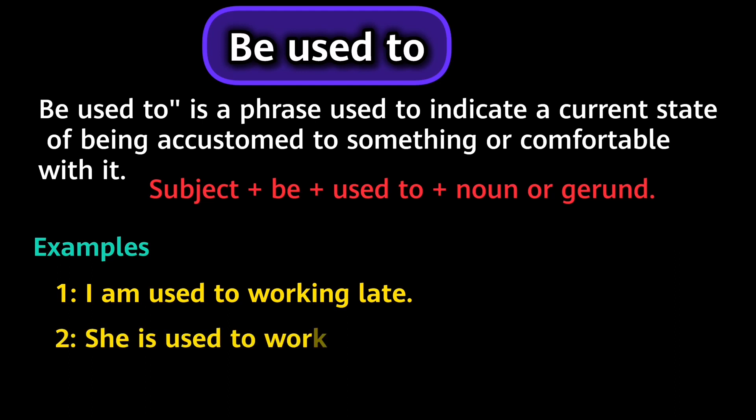She is used to working under pressure. Again, the phrase 'be used to' expresses familiarity with working under pressure through repeated experience. Simply, it means that she always worked under pressure so now she is accustomed to it. At the beginning it was difficult, but now it is not difficult for her because she has adjusted herself to working under pressure.